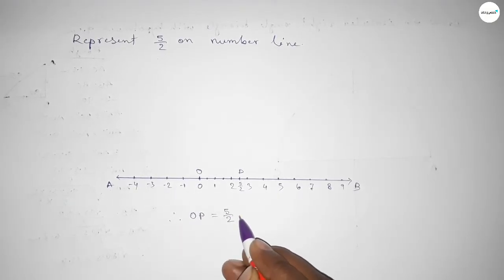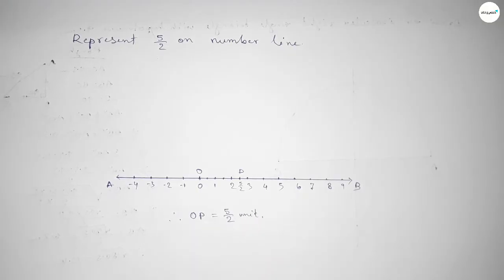So therefore OP equals 5 over 2 unit. That's all, thanks for watching. If this video is helpful to you, then please share it with your friend. Thanks for watching.